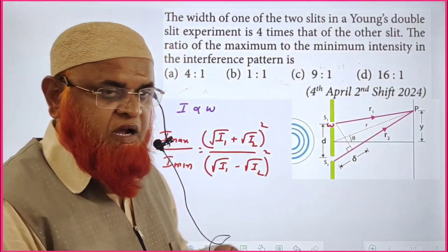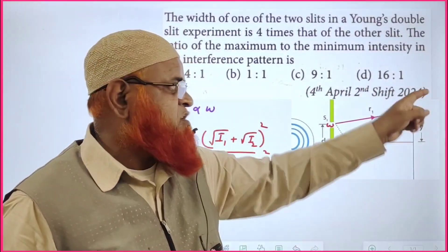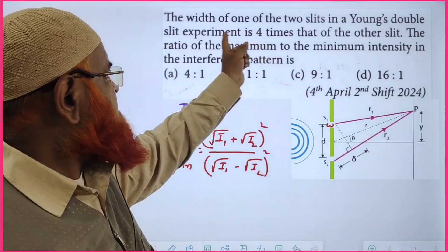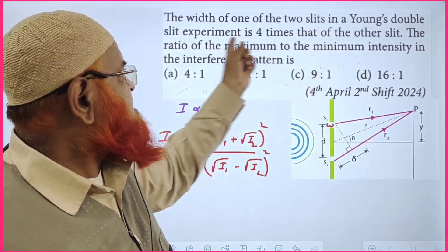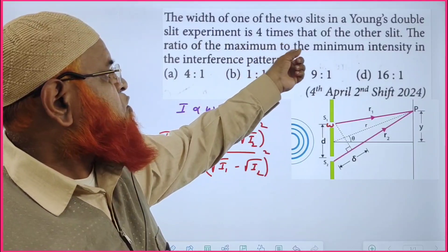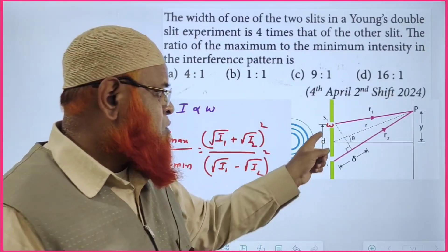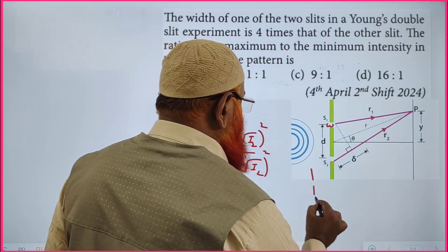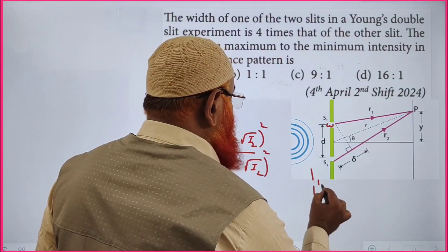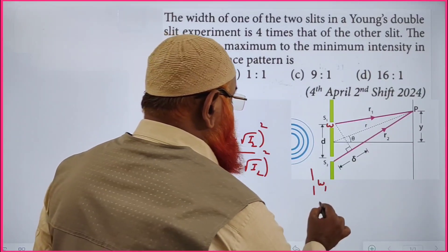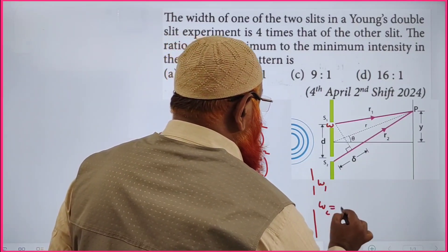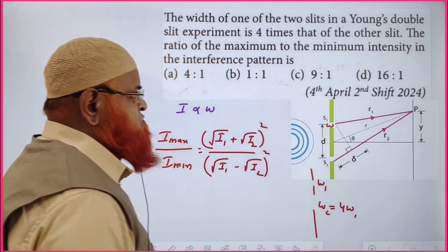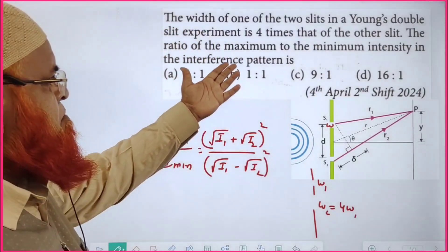Now let's discuss a latest previous year question from 2024. It is given that the width of one slit is 4 times the other slit. That is, W₂ = 4·W₁.